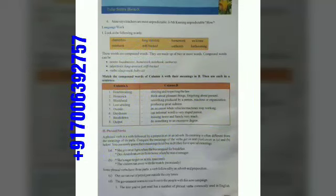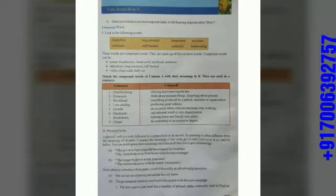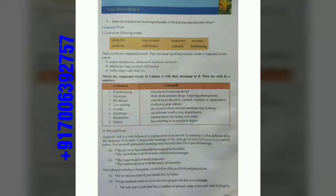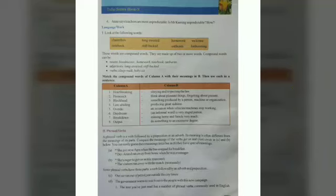Compound words, like other words, can be nouns, adjectives, and verbs. Nouns are names of places, persons, things, and sometimes abstract qualities. In these words, headmaster, homework, notebook, and outburst are nouns. Long-awaited and step-backed are adjectives because they show quality and add to the meaning of a noun. Sleepwalk and babysit are verbs.